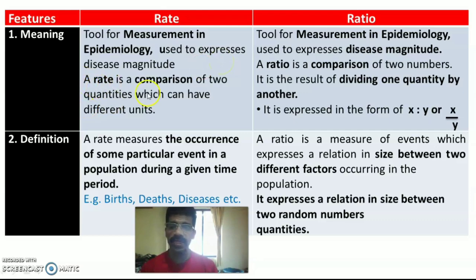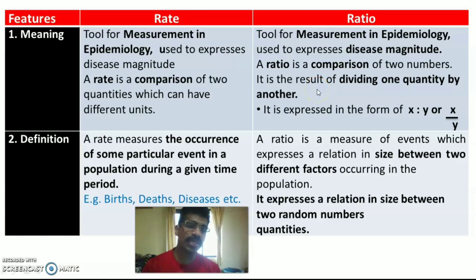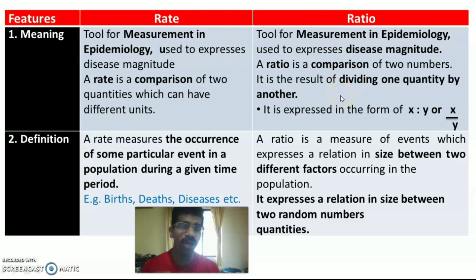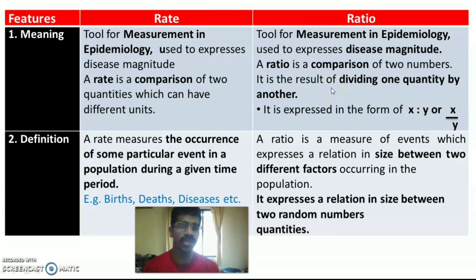From a mathematical point of view, a rate is a comparison of two quantities which can have different units. Whereas a ratio is also a comparison of two numbers — it is the result of dividing one quantity by another. Ratio is expressed in the form of either x:y (with a colon) or x divided by y.